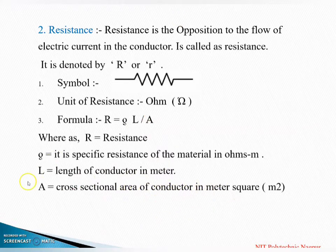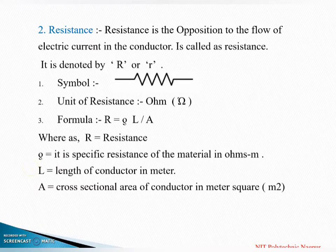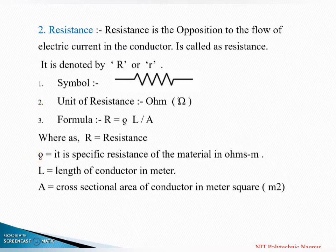हमने अभी दो definitions पढ़े हैं: current and resistance. Current क्या होता है? The rate of flow of electrons in a conductor. जो electrons conductor से flow होते हैं, उसे हम current बोलते हैं. जो electrons को oppose करने के लिए electric circuit में parameter होता है, उसका नाम है resistance. यानि current को oppose करने की property किसमें है? Resistance में.